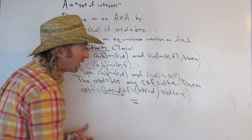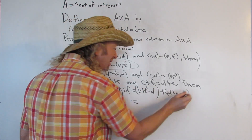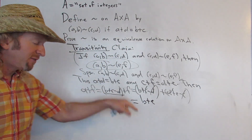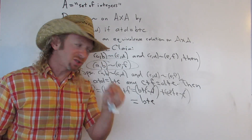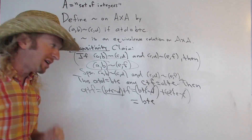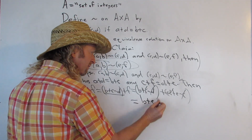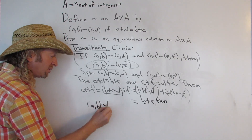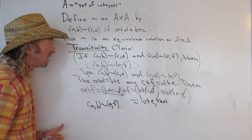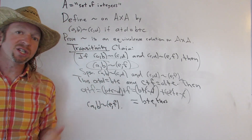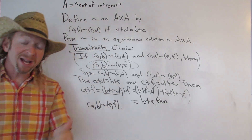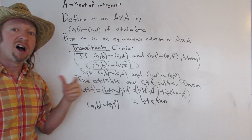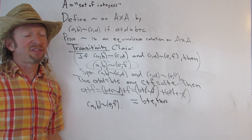The C's cancel and the D's cancel, and we just get B plus E. So A plus F equals B plus E, which is precisely the assertion that AB is related to EF. Thus AB is related to EF. This shows it's transitive. We've shown that our relation is reflexive, symmetric, and transitive. Therefore, it is an equivalence relation on the Cartesian product A cross A.